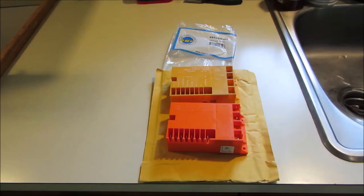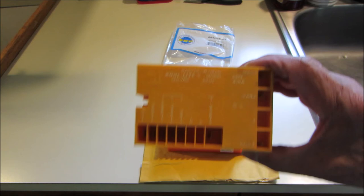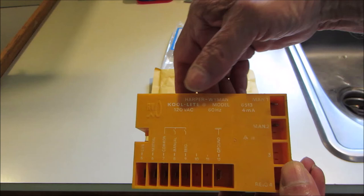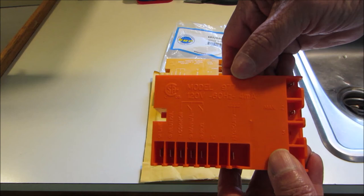Okay, so here's the old one. We'll have to unscrew it from the stove, try to swing it around and very carefully mark all those wires. Okay, these are the two units. This is actually the failed unit from the 20-inch Hardwick. And it's marked Harper-Wyman Cool Light Model 6513 4 milliamp. And it's replaced with this aftermarket Model 977. The orange one works perfectly.